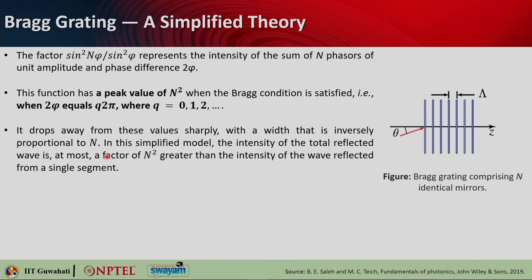The reflectance drops away from these peak values sharply, with a very sharp cutoff having a width inversely proportional to n. So larger the n, sharper will be the cutoff — that is why larger Bragg reflectance gives you a higher order filter. In this simplified model, the intensity of the total reflected wave is at most a factor of n squared greater than the intensity reflected from a single mirror or single segment.